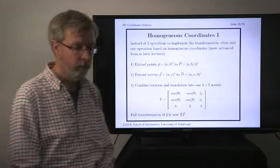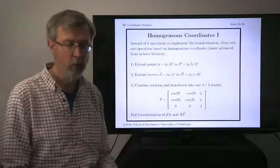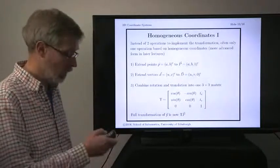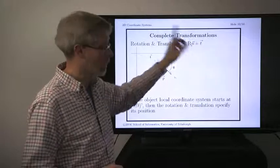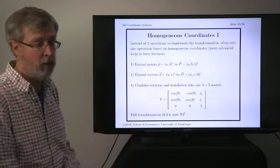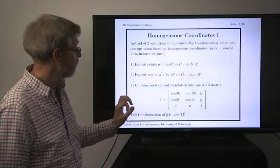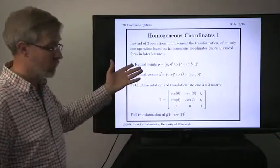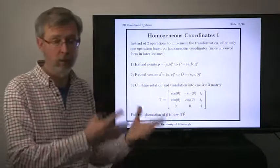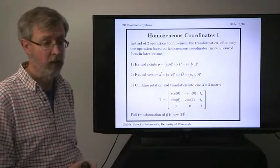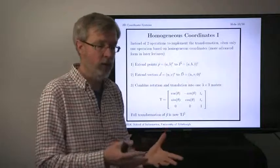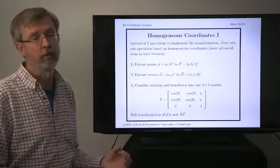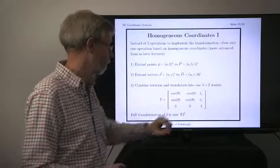We're going to move on to a more complicated problem: what do you do when you have multiple representations and multiple different transformations? It can be a bit complicated dealing with all of these individual rotations and translations. In order to make that simpler, we're going to use a representation called homogeneous coordinates. When we did the transformation earlier, we had to do two operations — multiply by the rotation matrix and then add the translation vector. It's more conceptually easy to think about a single transformation, and that's where we're going to use homogeneous coordinates.